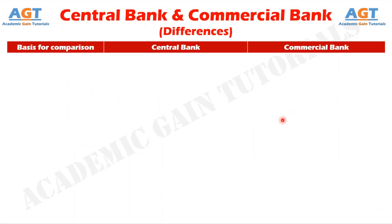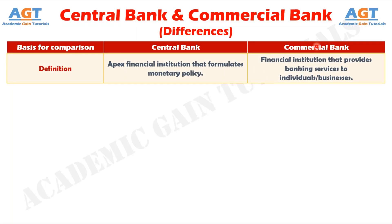So, let's look into the basic differences between central bank and commercial bank in a tabular form. Difference number one: a central bank is the apex financial institution responsible for forming monetary policy, whereas a commercial bank is a financial institution that provides services like deposits and loans to the public.